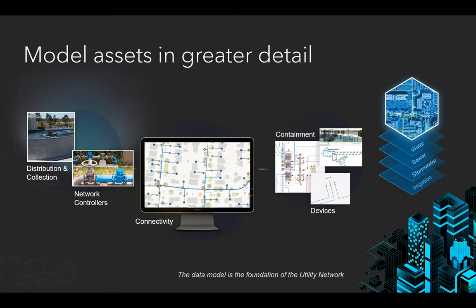Another advanced modeling capability of the utility network is connectivity associations. These connectivity associations allow you to connect features to your network without having a physical line connecting them. For example, this could be useful for connecting valves and meters in an apartment building where we aren't including the pipes between the mains and the individual meters within each unit.